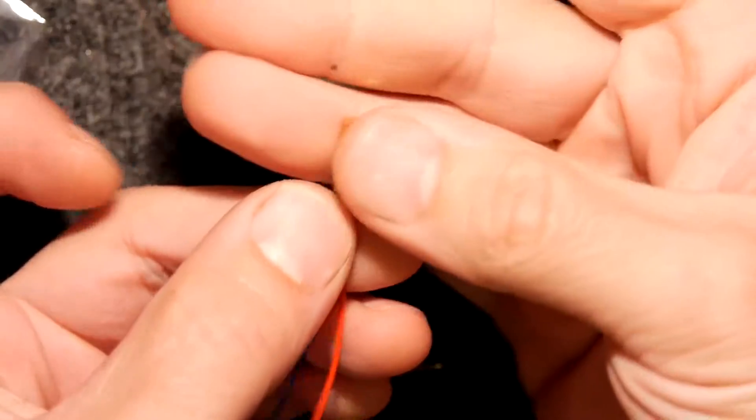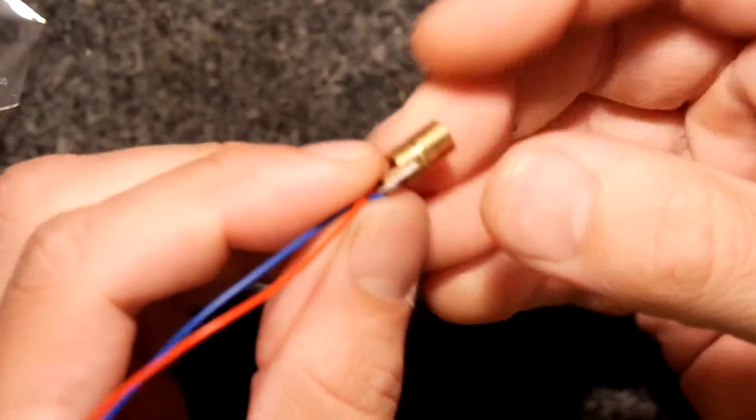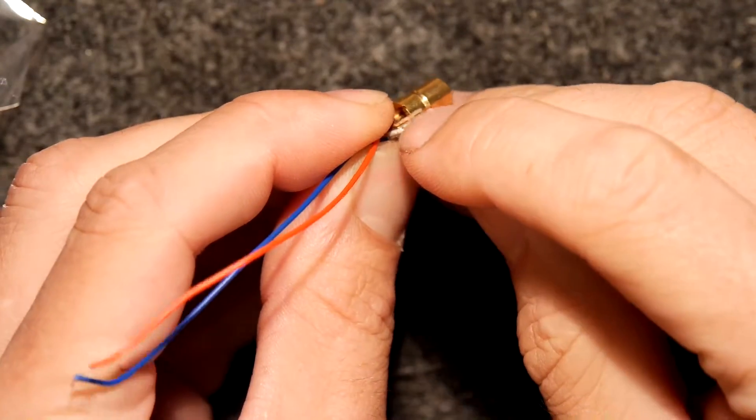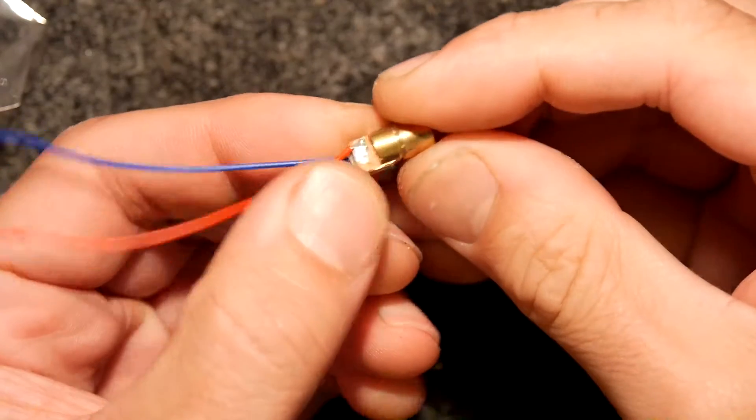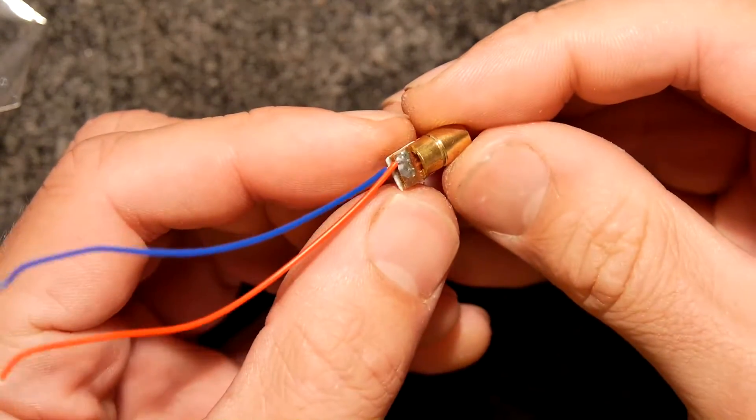So the brass actually acts as a heatsink and you can see that it's a small PCB that's been wedged into a notch in the brass and it's actually soldered in place. So the brass acts as a huge heatsink for this.